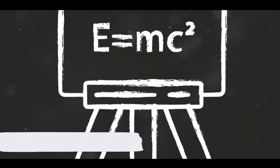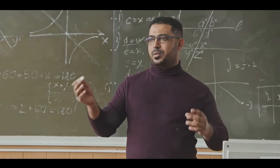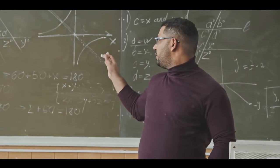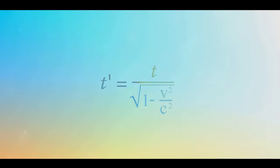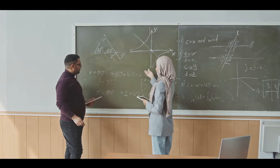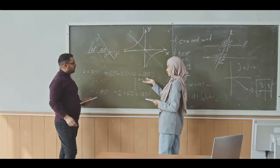Noether's big break came during the First World War when she was invited to join the University of Göttingen by mathematicians David Hilbert and Felix Klein. Here, she formulated what is now known as Noether's theorem, which connected the conservation laws and physics with symmetries and mathematics. This theorem revolutionized the theories of rings, fields, and algebras.